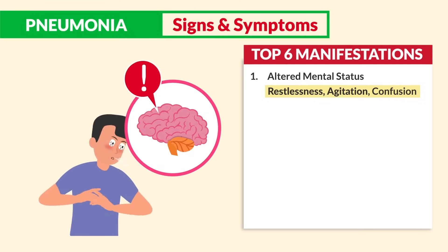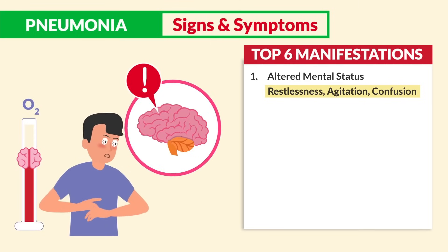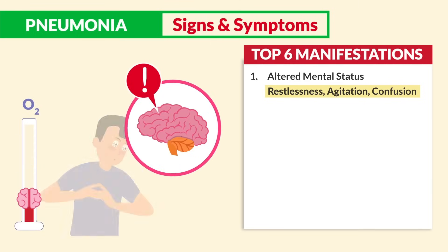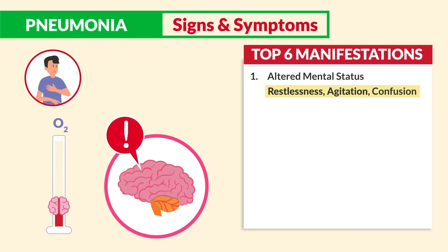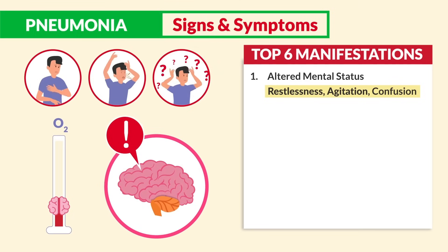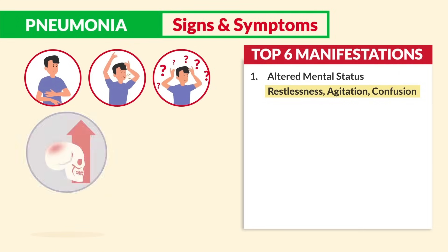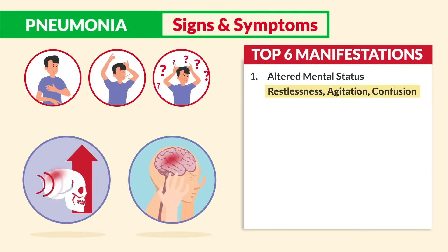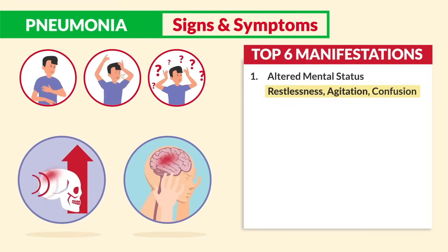The brain is very sensitive to oxygen, so these keywords also cross over for other conditions where we have low oxygen in the brain, like increased ICP and even strokes.